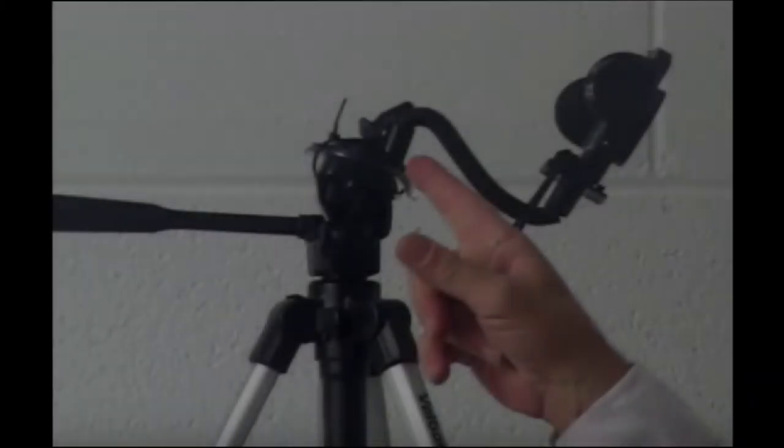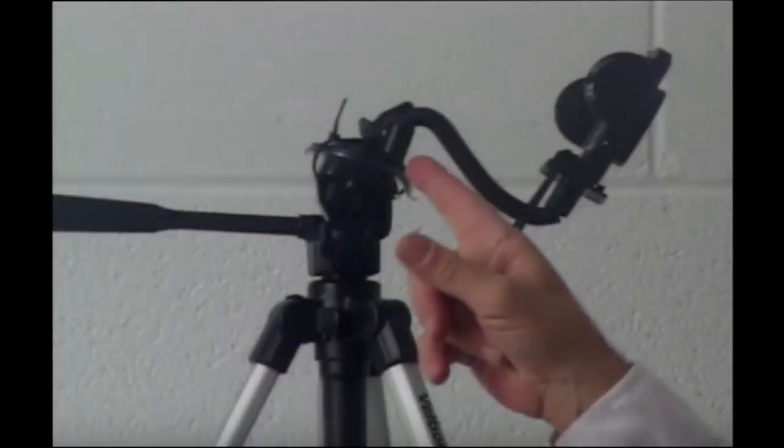Step 2. Using the zip ties, attach the suction cup base of the Craig mount to the top of the tripod.